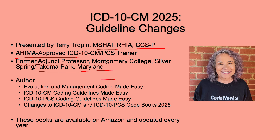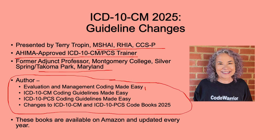I have also written some books, available on Amazon: Evaluation and Management Coding Made Easy, ICD-10-CM Coding Guidelines, and ICD-10-PCS Coding Guidelines Made Easy. These are updated every year. The PCS Coding book has 2024 and 2025 editions up on Amazon. The CM 2024 book is up, and the 2025 book should be up by end of August. The book on the changes between 2024 and 2025 is also already up on Amazon.